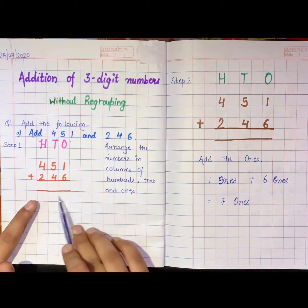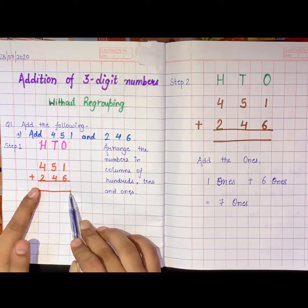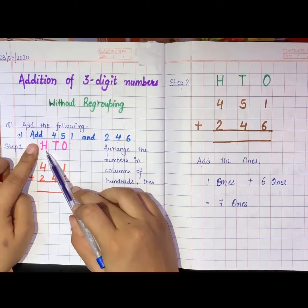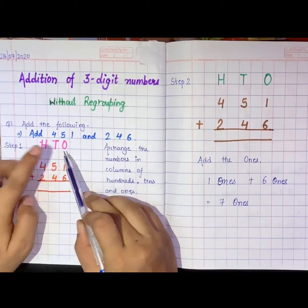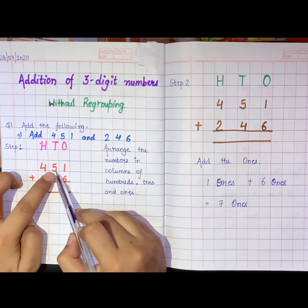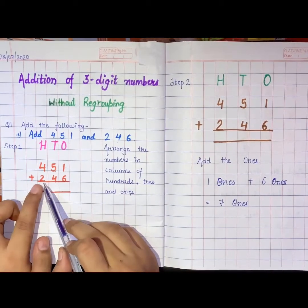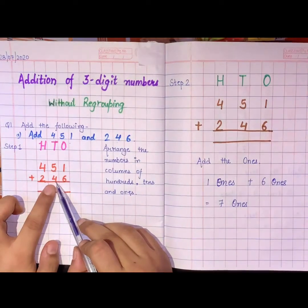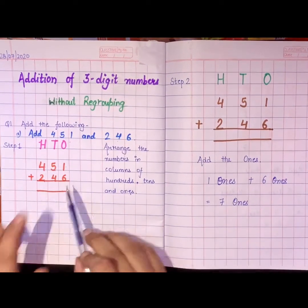I have put these numbers in these particular columns. This is the hundreds column, this is the tens column, and this is the ones column. Four comes under hundreds, five comes under tens, and one comes under ones. Similarly, two comes under hundreds, four comes under tens, and six comes under ones.